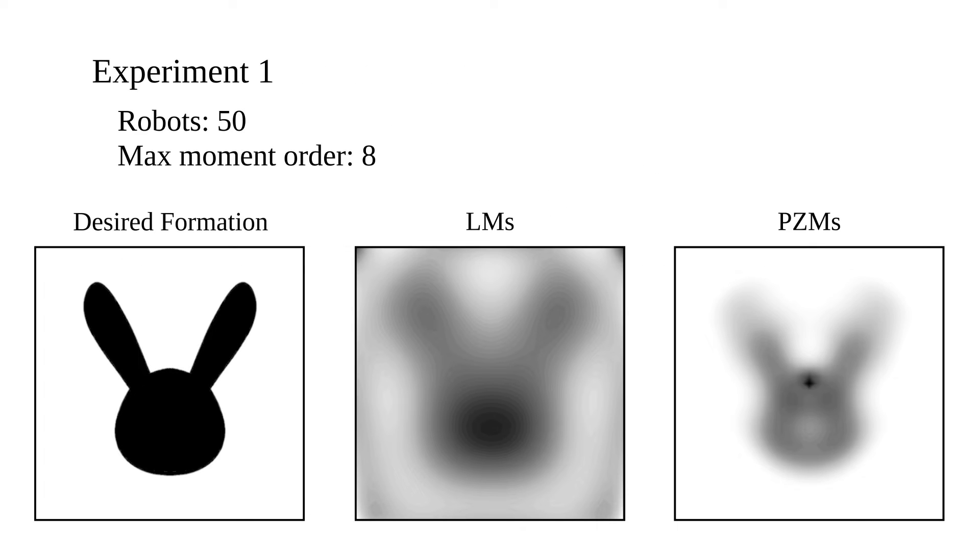Experiment 1 used 50 robots in 8th order Legendre moments and 8th order Pseudo-Zernike moments to represent the bunny head. For both trials, the robots were able to form the desired shape.